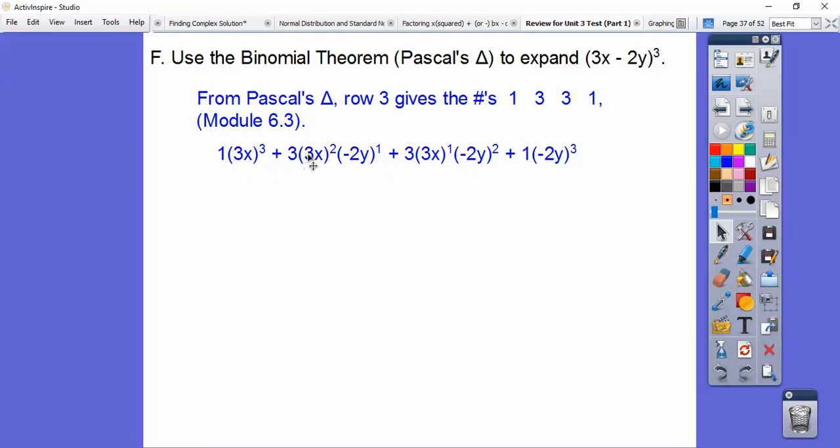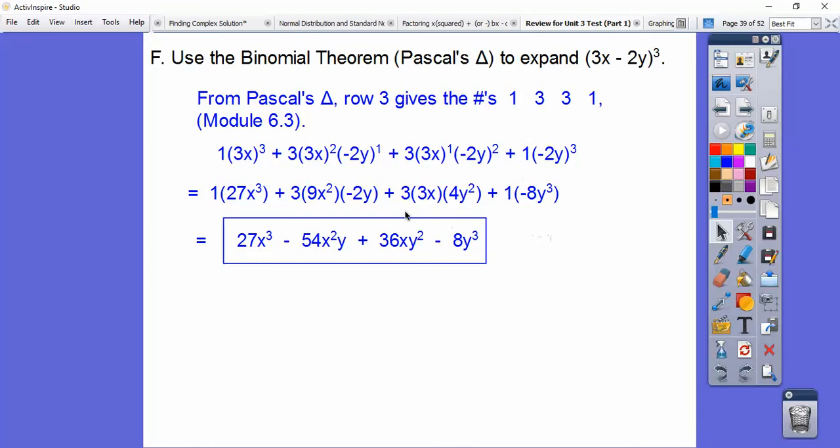3 to the third is 27. 3 squared is 9. Negative 2 to the first is negative 2. So this would be negative 2y. This is 3. This is 3. This is going to be a positive 4 because a negative 2 times negative 2 because it's squared is positive 4. Negative 2 times negative 2 times negative 2 is negative 8. And then we multiply all the numbers. So this is 1 times 27 x³. This is going to be 3 times 9 is 27 times a negative 2. That's going to be a negative 54 and so on. We're just going to multiply all those numbers. 3 times 3 times 4 is 36. And then 1 times negative 8 is negative 8. So there's the answer right there.